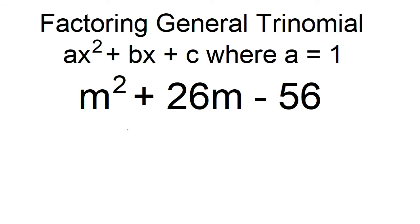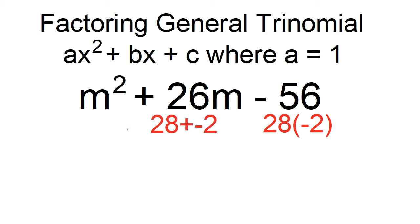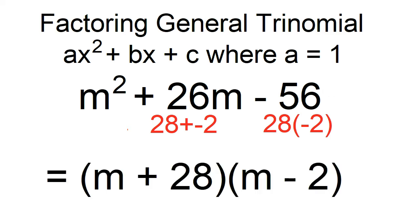Factor m squared plus 26m minus 56. In this example, b is 26 and c is negative 56. Think of two numbers that will give you a product of negative 56 and a sum of 26. The numbers are 28 and negative 2. The factors are m plus 28 and m minus 2.